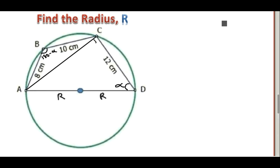So it means this angle at C is 90 degrees. We've now divided this cyclic quadrilateral into two triangles: triangle ABC and triangle ACD.